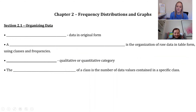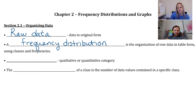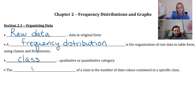Chapter two covers frequency distributions and graphs. Let's get some vocabulary down first. Data in its original form is called raw data. A frequency distribution is the organization of raw data in table form using classes and frequencies. A class is a qualitative or quantitative category, and the class width is the number of data values contained in a specific class. We'll see what this means as we do examples.